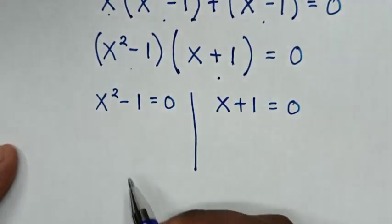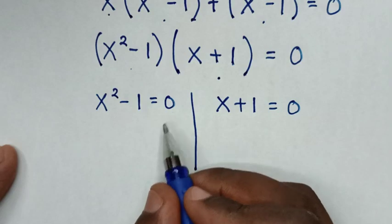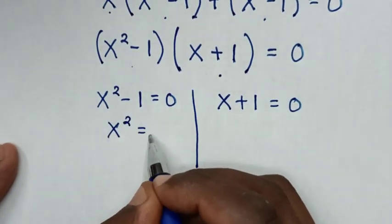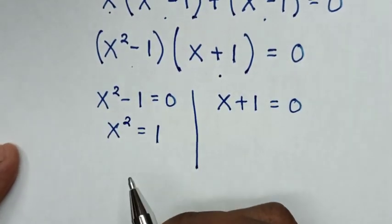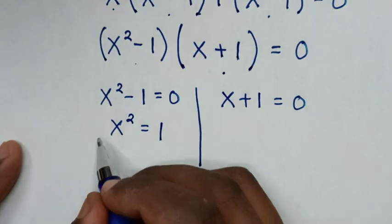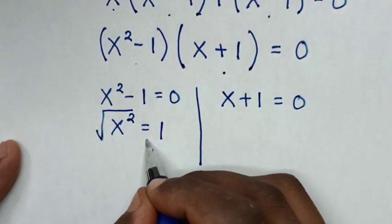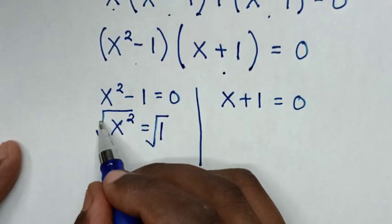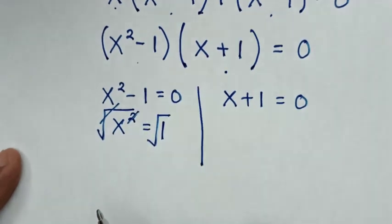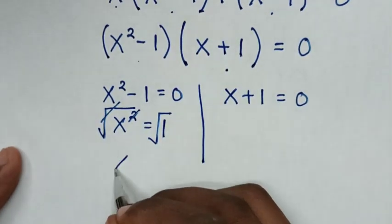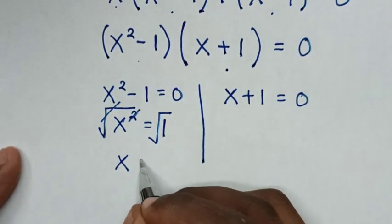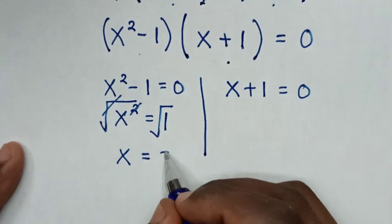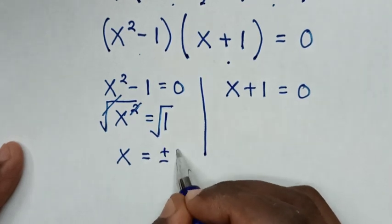From the first solution, we take -1 to the right side, so x² = 1. Then we apply square root on both sides: the square root cancels with the square, giving x = ±√1 = ±1.